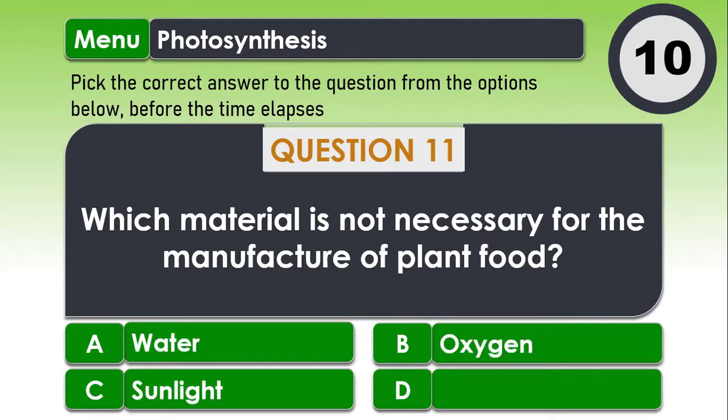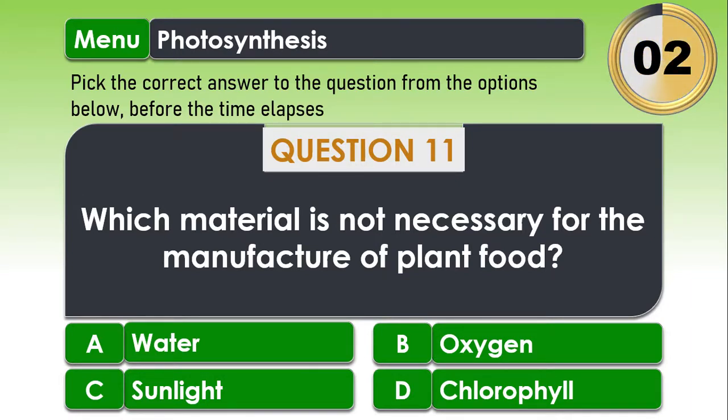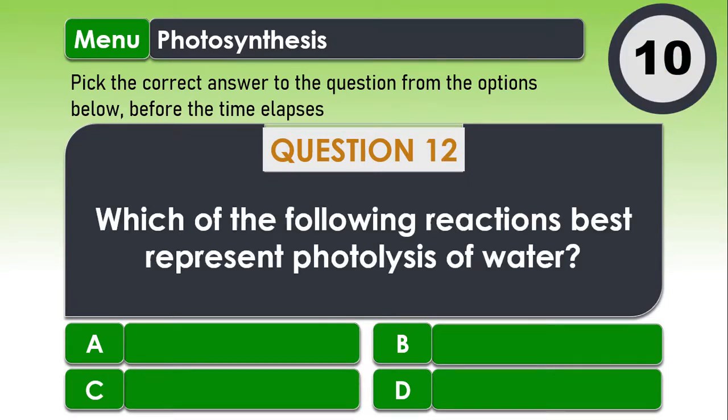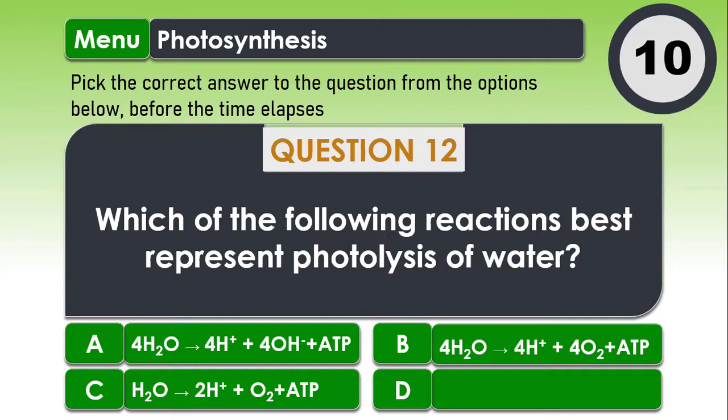Question 11. Which material is not necessary for the manufacture of plant food? A. Water B. Oxygen C. Sunlight and D. Chlorophyll. Question 12. Which of the following reactions best represents photolysis of water? A. 4H2O to give us 4H+ plus 4OH- plus ATP B. 4H2O to give us 4H+ plus 4O2 plus ATP C. 2H2O to give us 2H+ plus O2 plus ATP D. 4H2O to give us 8H+ plus 4O2 plus ATP.